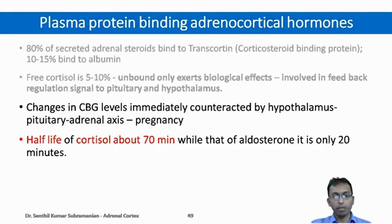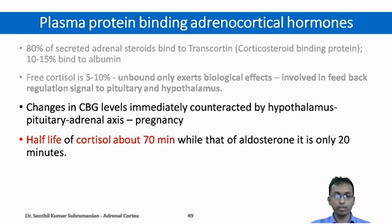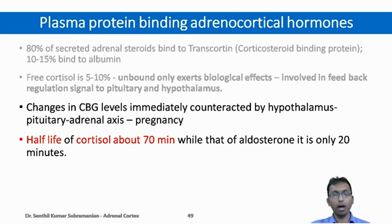For example, in pregnancy, the corticosteroid-binding protein level increases and the total cortisol level seems to be increased. However, the free cortisol level remains the same, because the free cortisol gives feedback information to pituitary and hypothalamus to maintain the cortisol level in plasma. Another important point is the half-life: the half-life of cortisol is about 70 minutes while for aldosterone it is only 20 minutes.